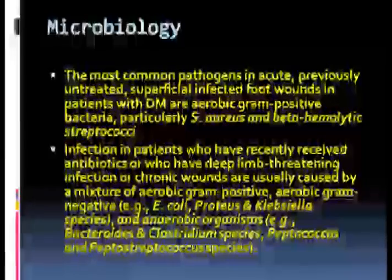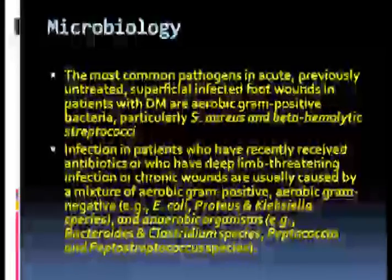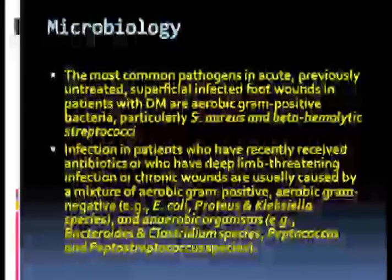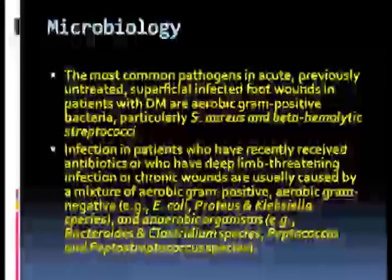Regarding microbiology, the most common pathogens in acute, previously untreated, superficial infected foot wounds in patients with diabetes are aerobic gram-positive bacteria, particularly Staph aureus and beta-hemolytic streptococci. Infections in patients who have recently received antibiotics, or who have deep limb-threatening infections or chronic wounds, are usually caused by a mixture of aerobic gram-positives, aerobic gram-negatives such as E. coli, Proteus, and Klebsiella species, and anaerobic organisms.